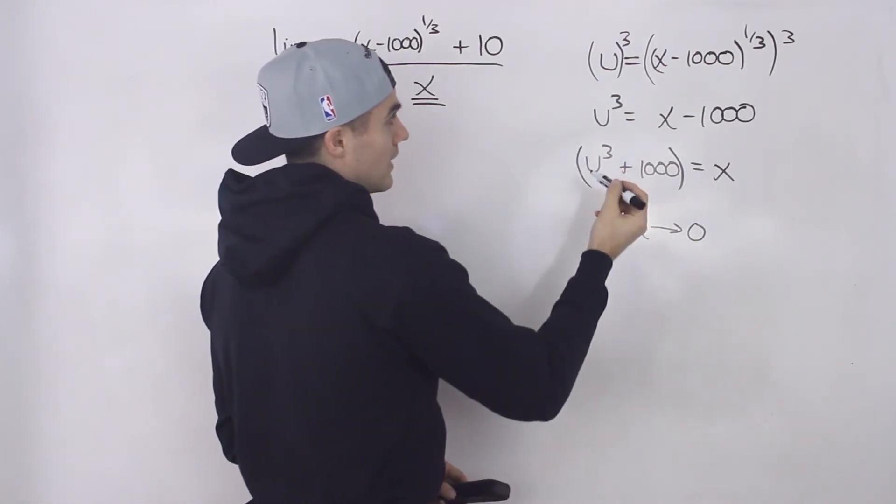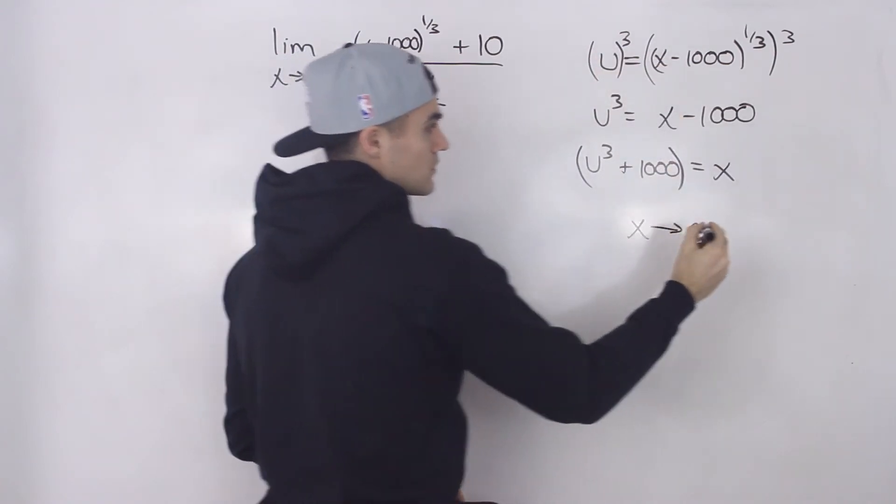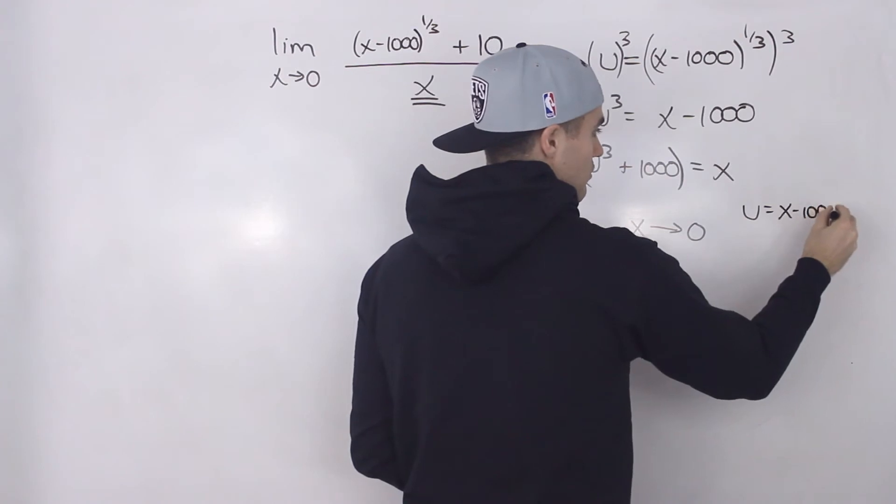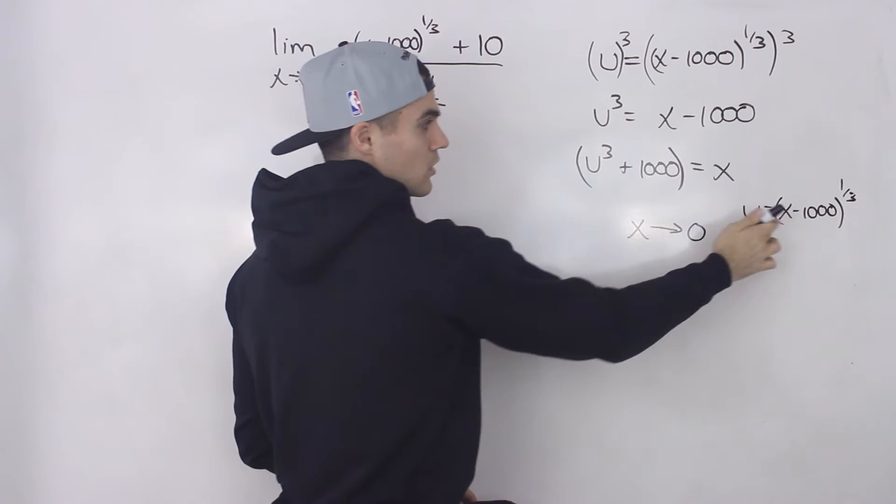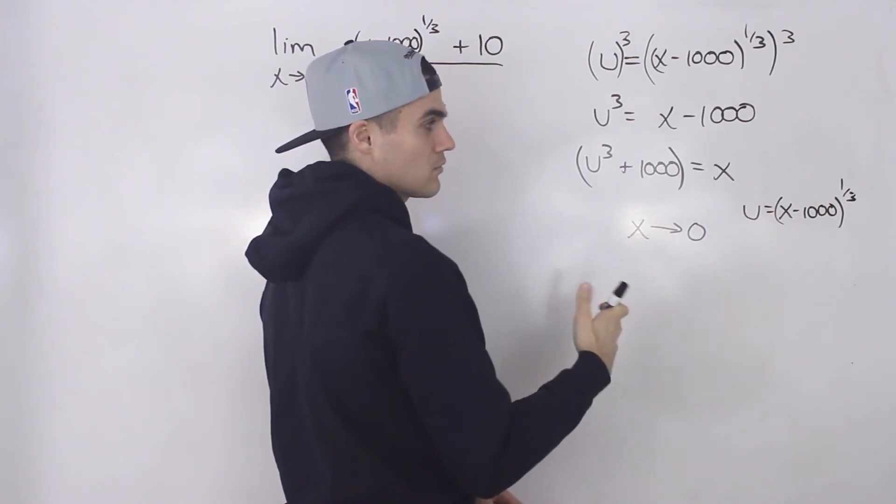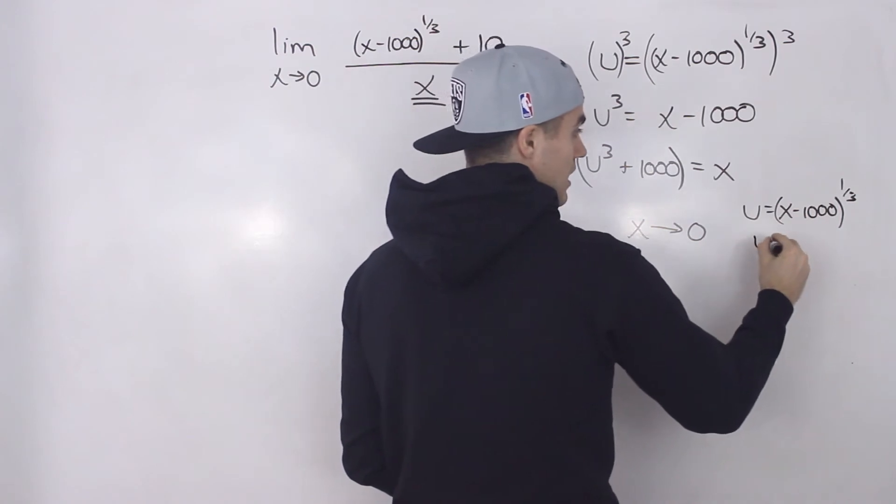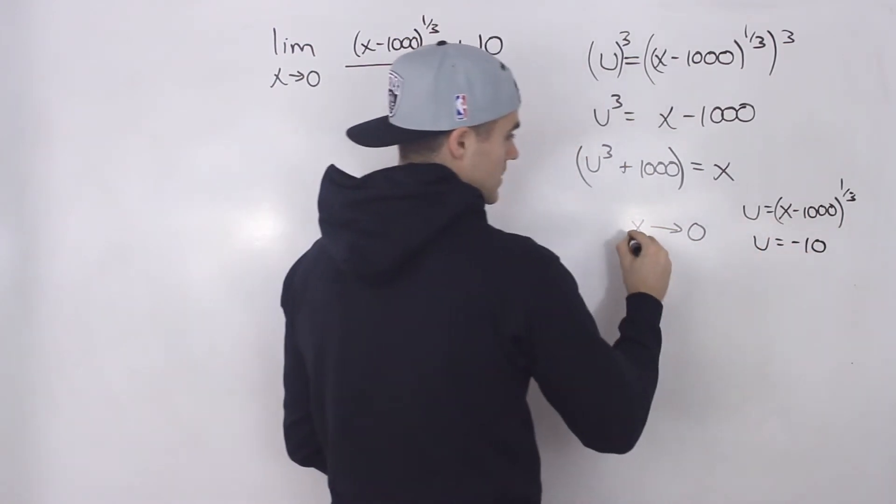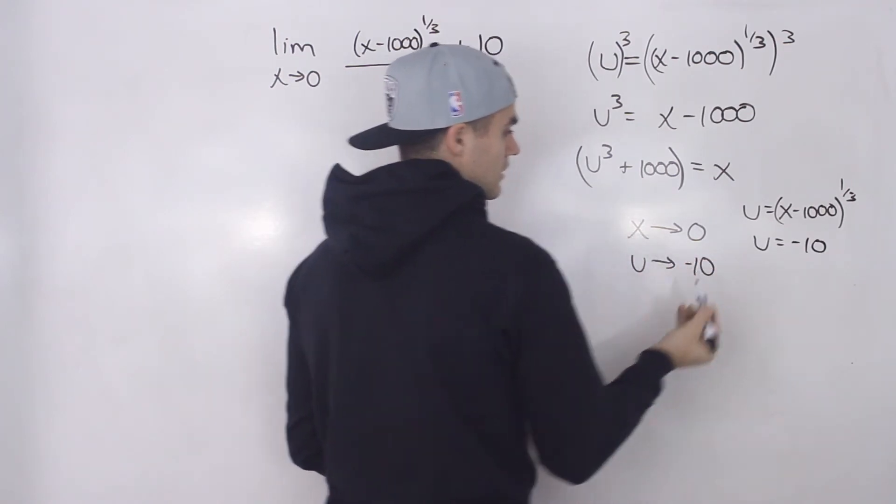We can figure that out with our initial change of variable. We know that u is equal to x minus 1,000 to the power of 1 over 3. Well, if x is approaching 0, if we plug in 0 for x there, we'd have minus 1,000 to the power of 1 over 3, which would give us a u value of negative 10. So as x approaches 0, that's the same as u approaching negative 10.